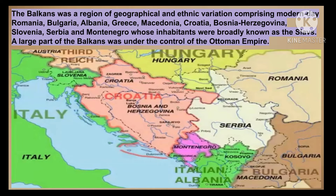Remember, students — an MCQ question might come asking: during the 19th century, this Balkan region was under the control of which empire? So you have to write Ottoman Empire. The Ottoman Empire also controlled Greece, because Greece was part of this Balkan region. About Greece, I have explained you all in the third topic — the Greek War of Independence — how they gained independence from the Ottoman Empire.